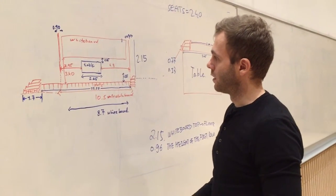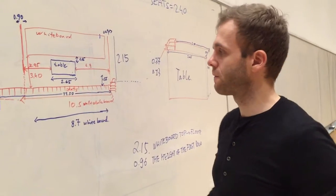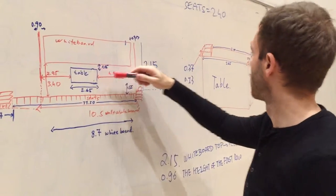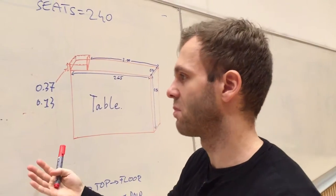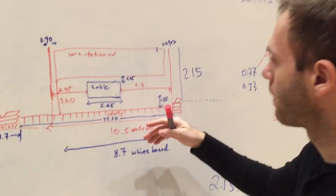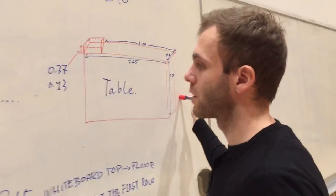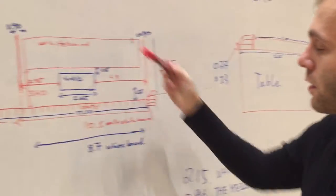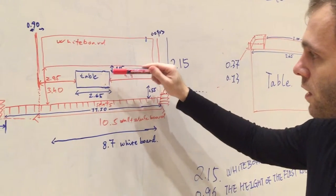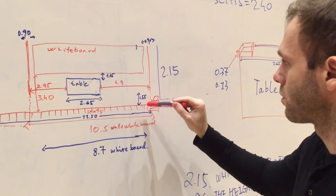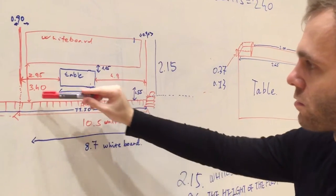And the table is 2.65 long and 0.7 deep, and the height of the table is 0.94. The distance between the table and the whiteboard is 1.15 and between the table and the seats at the first row is 1.55, so this whole distance is 3.40.